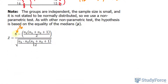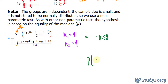Substituting 16 into S, with n sub 1 equal to 4 and n sub 2 equal to 4 — where these represent the number of observations in each group — you should end up with a Z value of negative 0.58. We need this value to decide whether to accept or reject the null hypothesis. We find the probability that Z is less than negative 0.58, and don't forget to multiply this value by 2 because the hypothesis was written as equals or not equals — that's a two-tailed test.